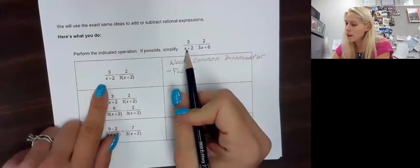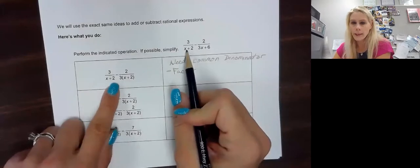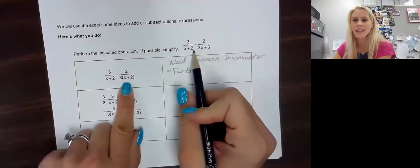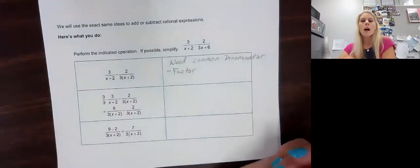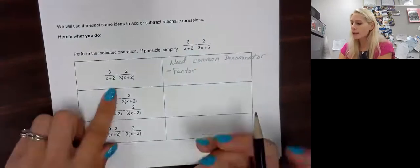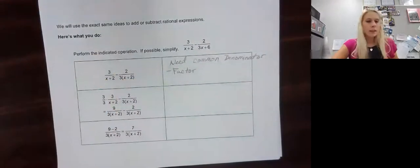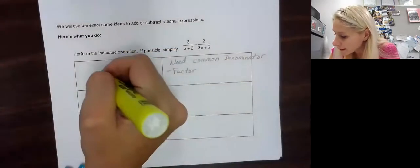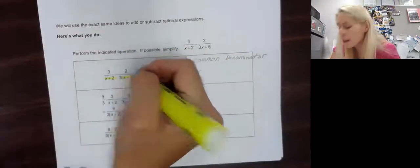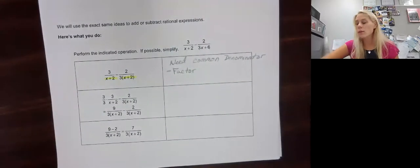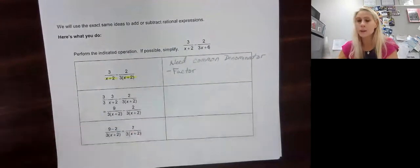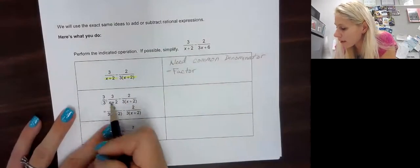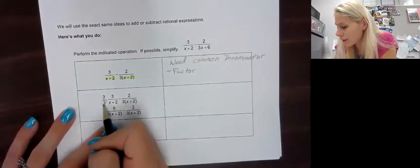As you can see, the x plus 2 stays the same, but 3x plus 6 has a GCF — a greatest common factor. So we factor that out. Now we ask ourselves: what do we already have in common? What we already have in common is x plus 2. Since they're already in common, the only thing we're missing is that 3. So all I have to do is put a 3 there, and now our denominators are the same.